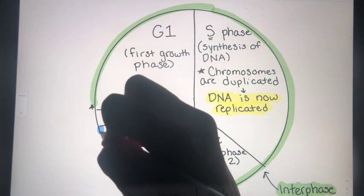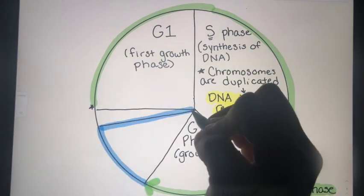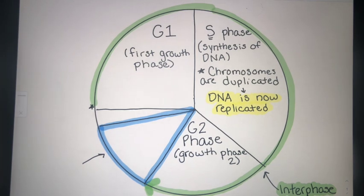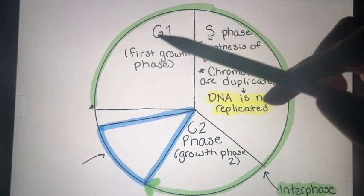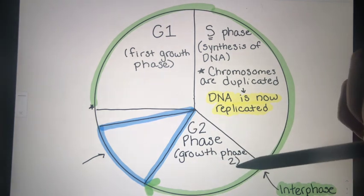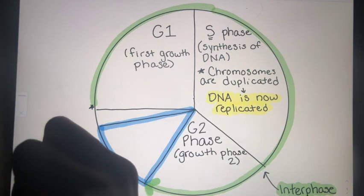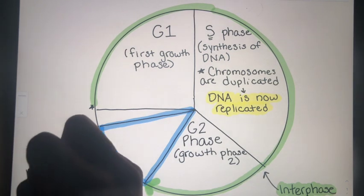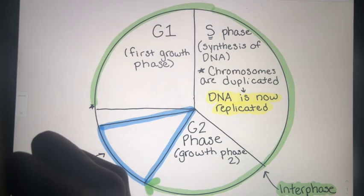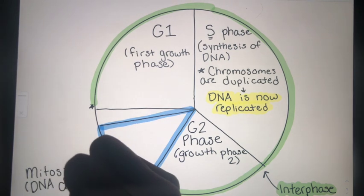In this next section, we have now left interphase behind. Our cell is no longer in interphase. Once our cell has grown up, replicated its DNA, checked that the DNA was okay, grew up a little bit more, now we can say that we're ready for mitosis. And it's during mitosis that the DNA is divided. One copy is going to one daughter cell, and the other copy is going to the other daughter cell.